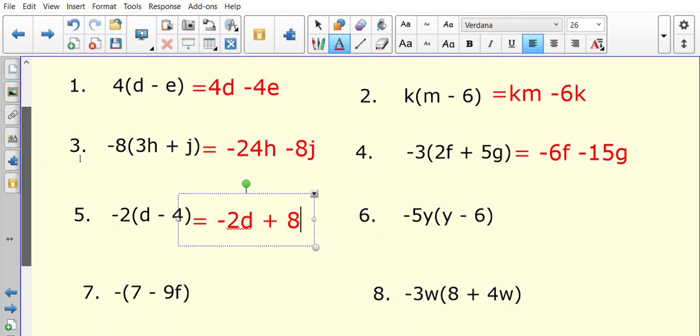Looking at number six, negative 5y times y is negative 5y squared. Remember, y times y would be y squared. And then I have negative 5y multiplied by negative 6 will be positive 30y.